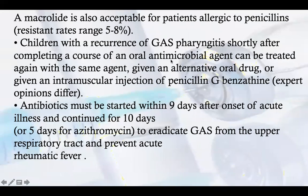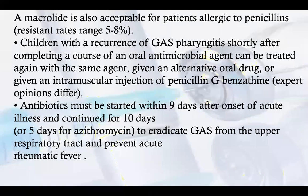Macrolides are also acceptable for patients allergic to penicillin and are widely used. Azithromycin and Clarithromycin are the current macrolides of choice, both available in suspension form. If there is recurrence of Group A Streptococcal pharyngitis shortly after completing a course of oral antimicrobial agent, it can be treated again with the same agent or an alternative oral drug, or with an intramuscular injection of Penicillin G.